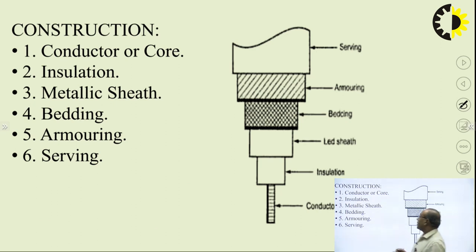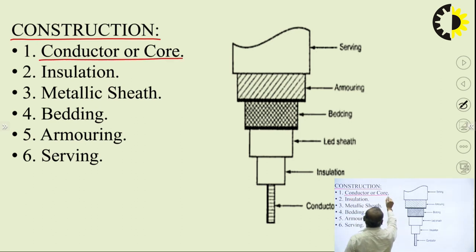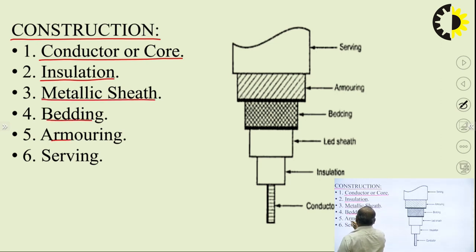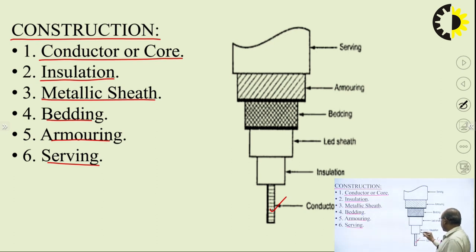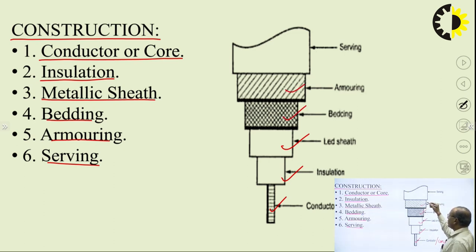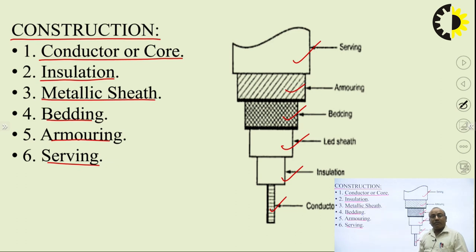The constructional features of a cable include the following parts: conductor or core, which is the innermost part; insulation over it; metallic sheath such as lead sheath over the insulation; bedding over that; then armoring; and finally the outermost part is serving, which allows service connection for the cable with the external circuit.